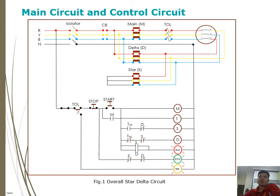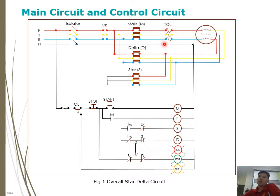This is the main circuit and the control circuit for the star delta motor connection. The power circuit is indicated by red, yellow, blue, and neutral — a three-phase power supply going to the motor — and also a control circuit for the motor start/stop or tripping control. There are three contactors being used: a main contactor, a delta contactor, and a star contactor. The motor winding has six leads — for example, R1, R2 for the red phase, Y1, Y2 for yellow, and B1, B2 for blue — plus a thermal overload relay.